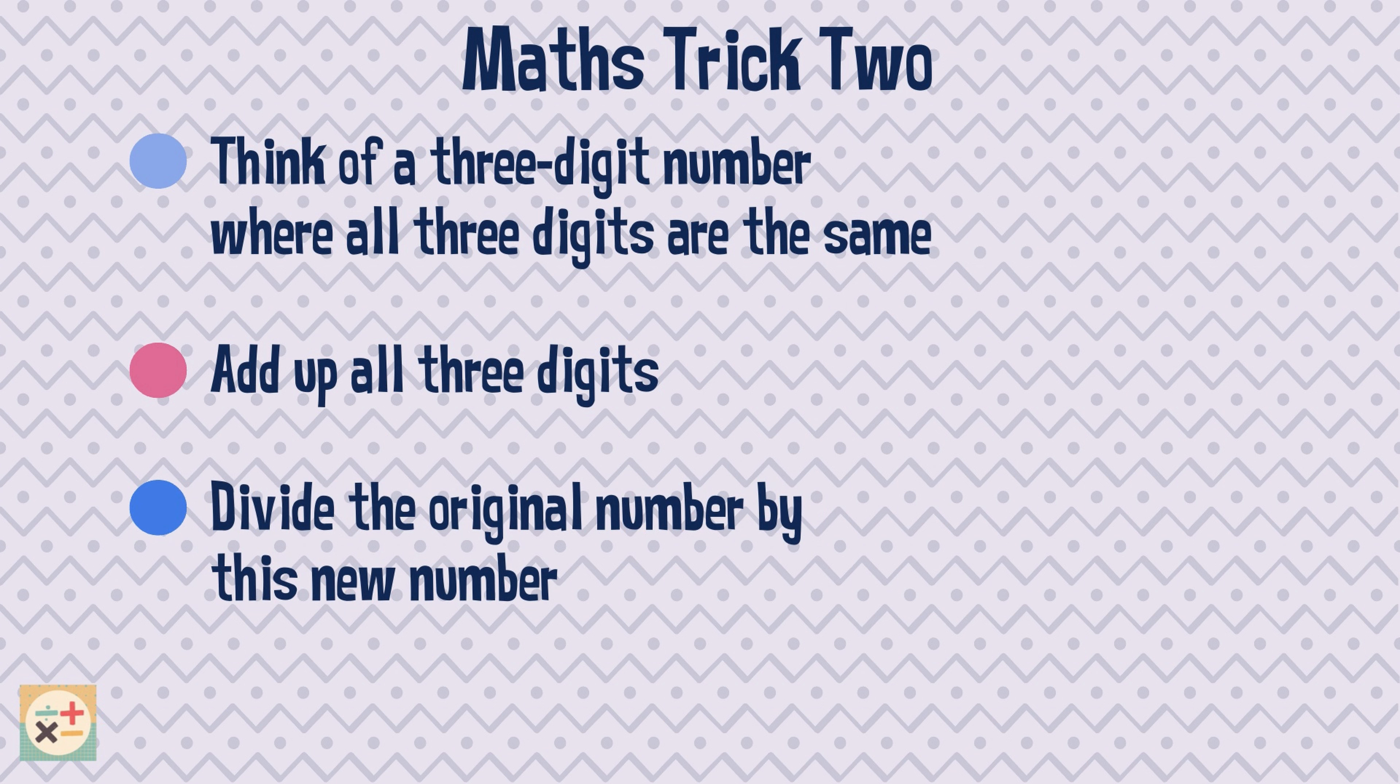Divide the original number by this new number. The answer is 37. Have a look at this example using the trick.